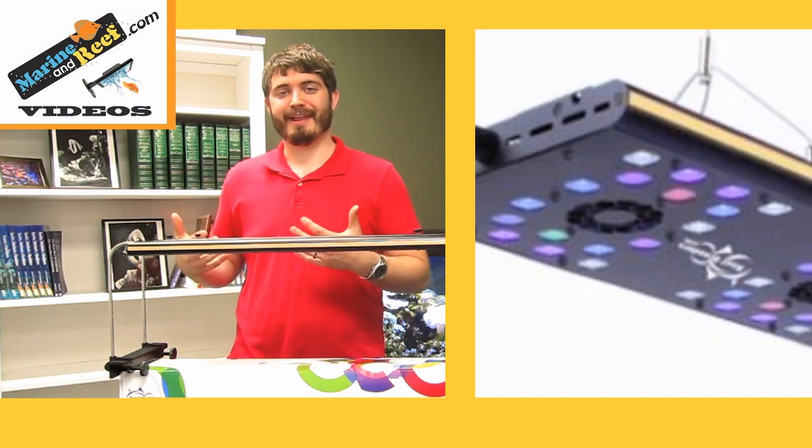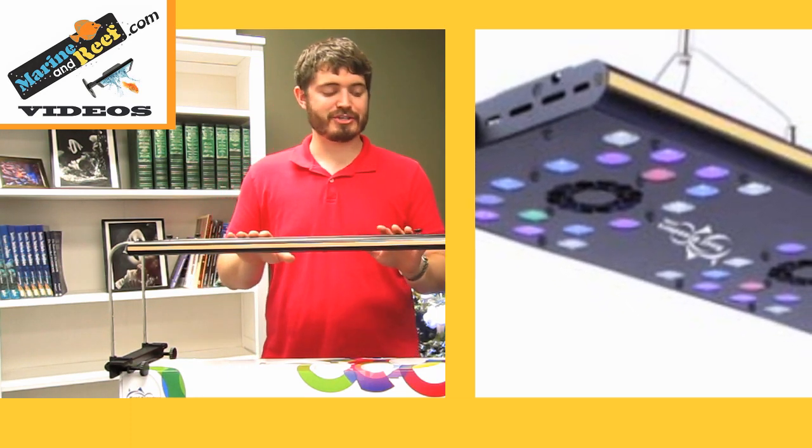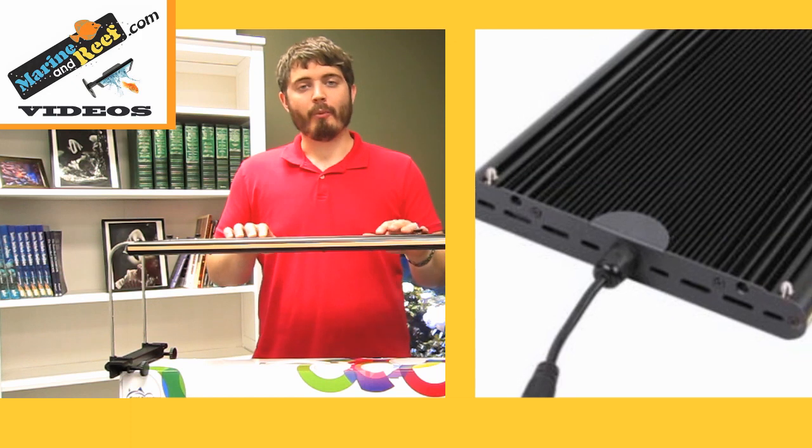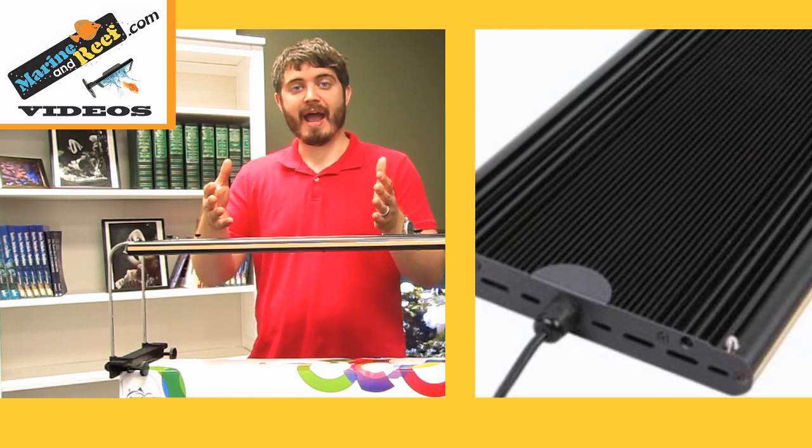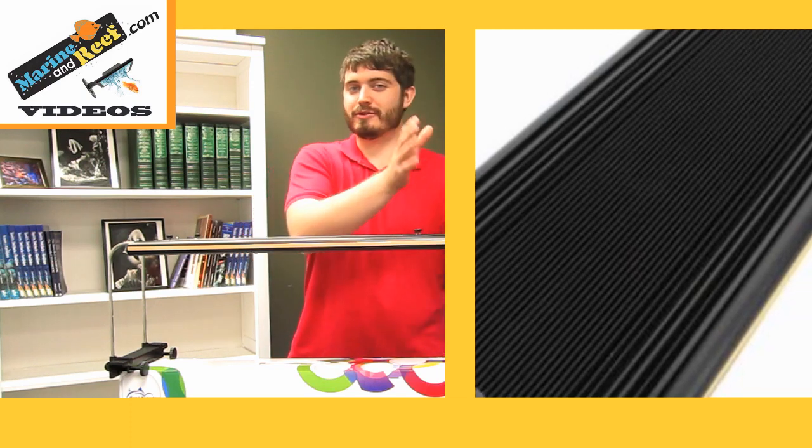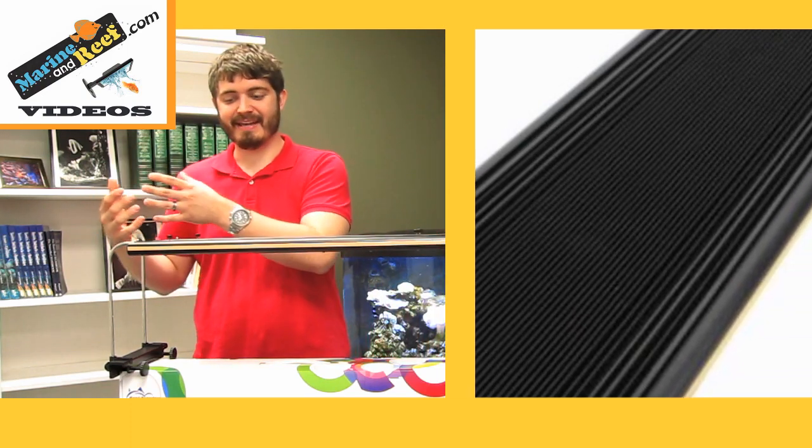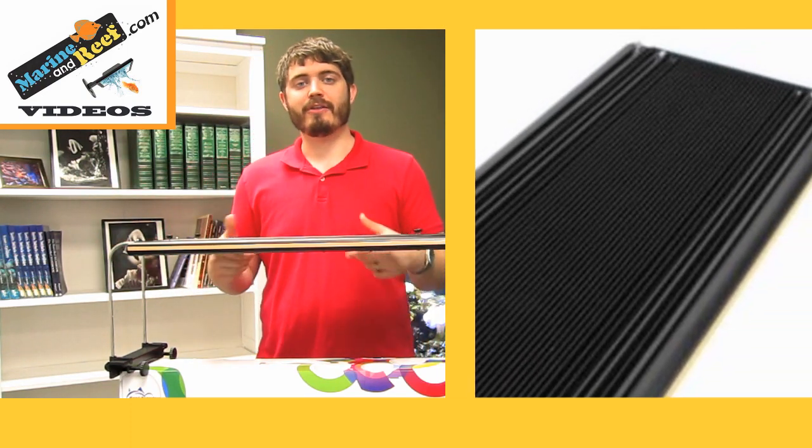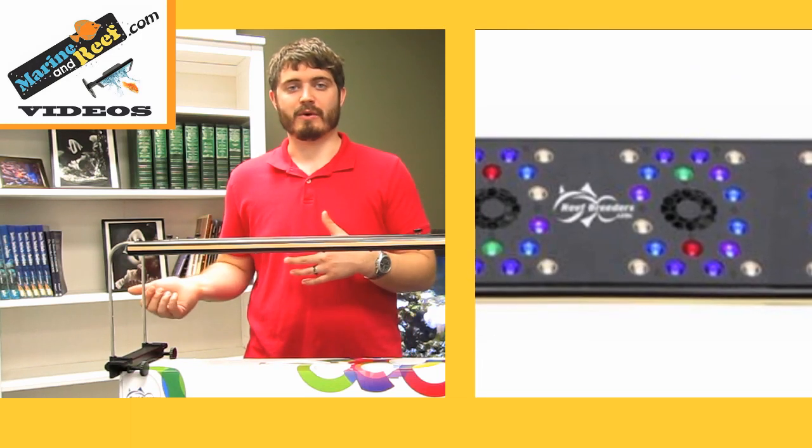And the reason why there's so many different lengths is because this is a light fixture versus a pendant. So while many of the higher end, very high output LED lights in the market are pendants, and on long tanks you use two or three of those lights end to end, this is just a single light and you buy the correct length for your size aquarium.